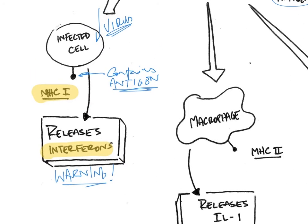So at the cellular level, that antigen is used in MHC1. All cells except white blood cells have MHC1. That's kind of one pathway.